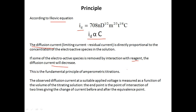This decrease in current can be plotted as a function of the volume of reagent added. The observed diffusion current at the suitable applied voltage is measured as a function of the volume of titrating solution. The end point is the point of intersection of the two lines showing the change in current before and after the equivalence point — the intersection of those two current lines is taken as the end point.